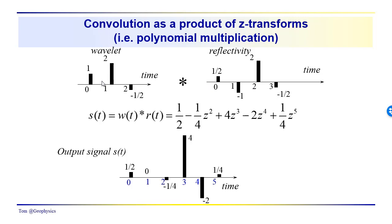As a mental exercise, think about reversing this wavelet, going through the multiplication process, and sliding it through the reflectivity series. Notice that for the first couple of terms: reverse the wavelet, and we have overlap of one-half with one, giving one-half times one — output of one-half. Slide one sample: overlap of one and two gives one times minus one is minus one, and one-half times two is plus one. Plus one and minus one gives zero — the output for the second sample. This is a different approach but gives the same result, which comes out very nicely from the polynomial Z-transform multiplication.